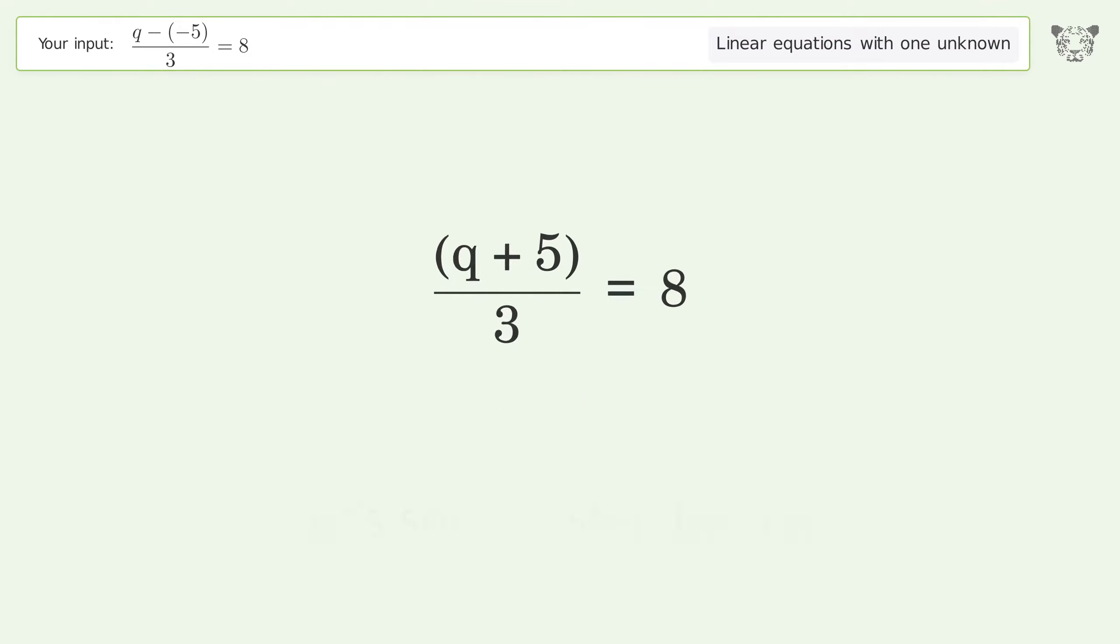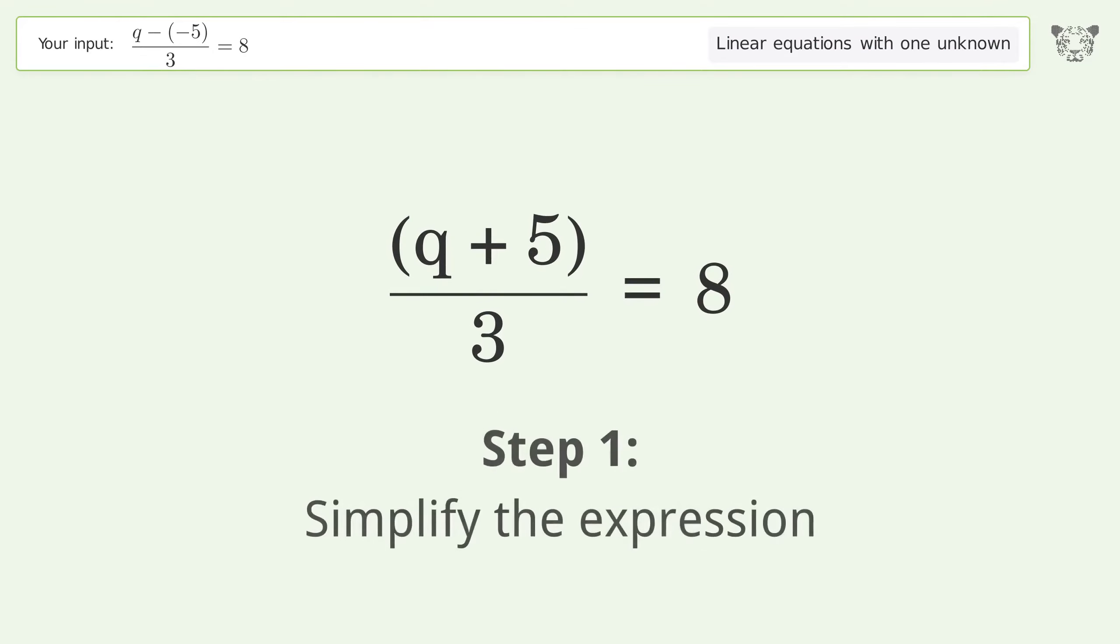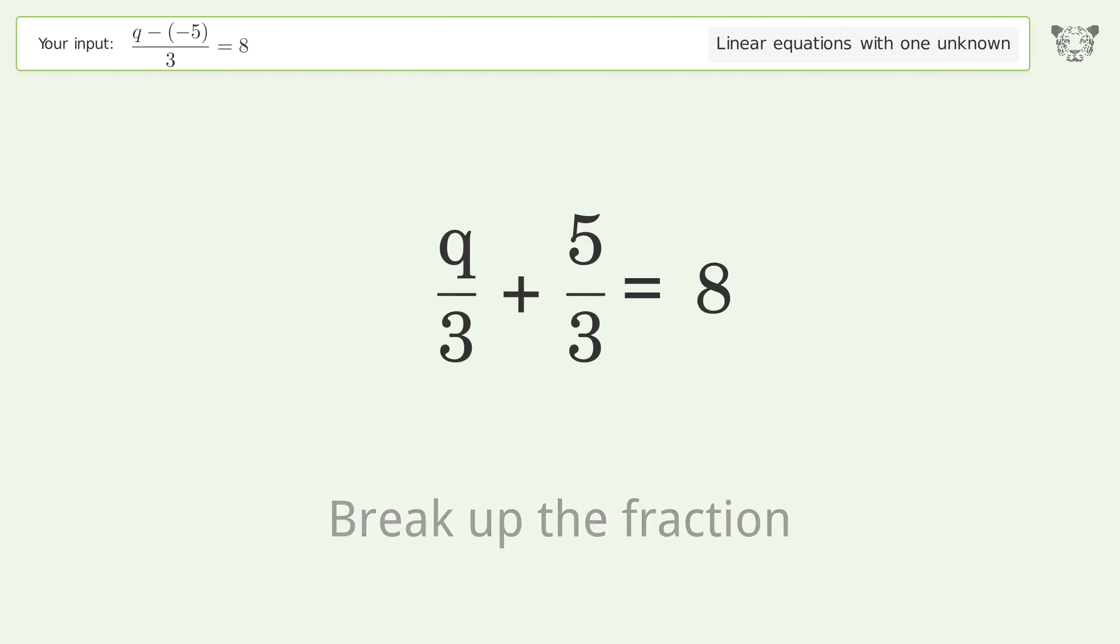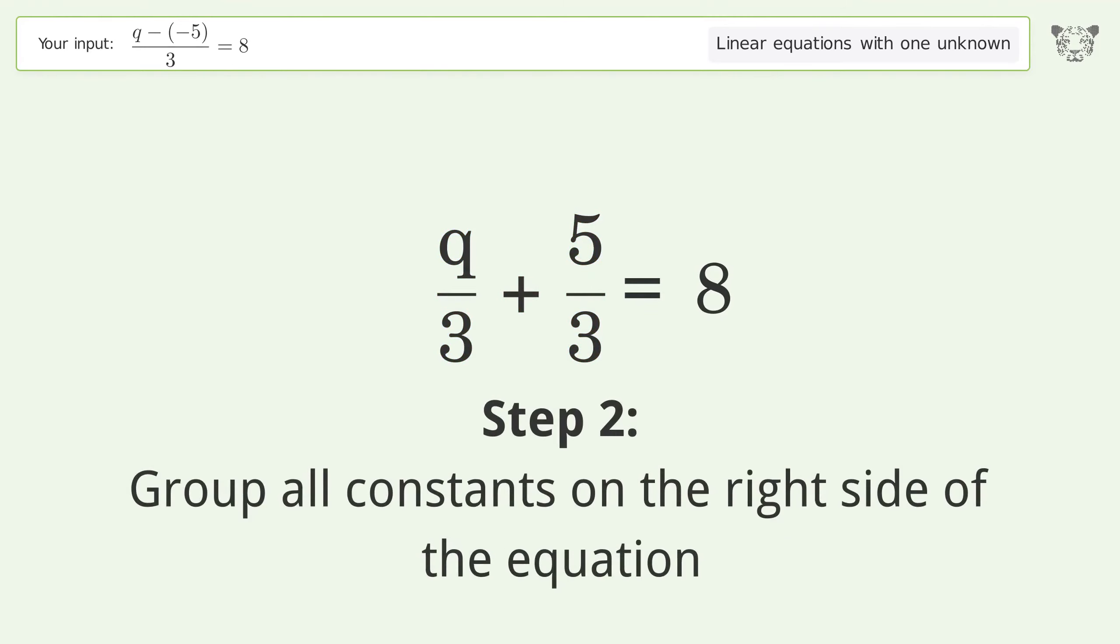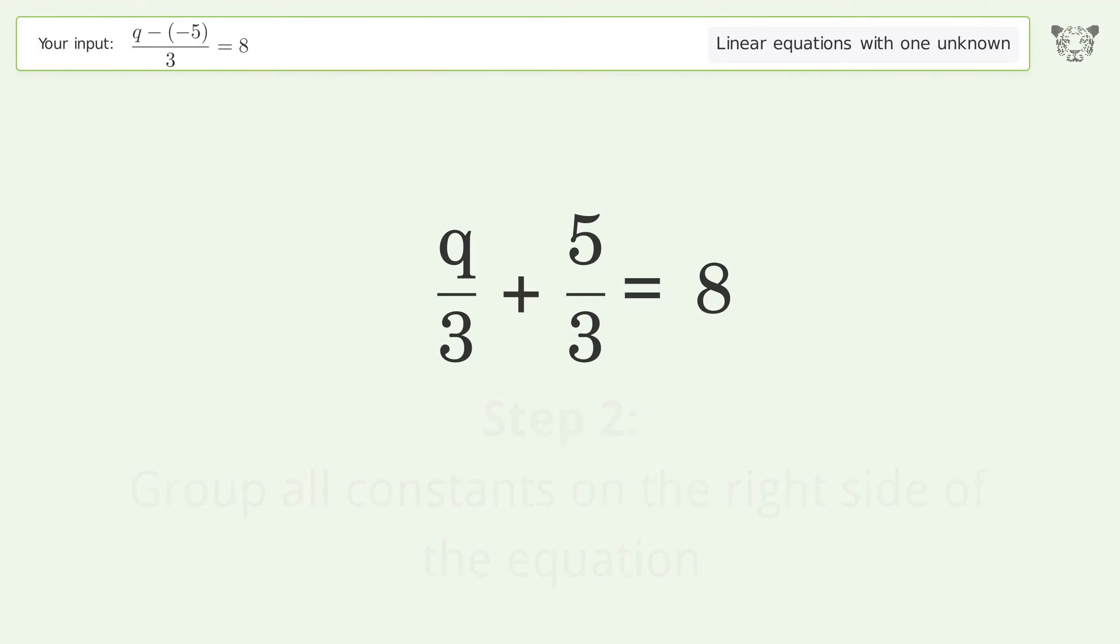Let's solve it step by step. Simplify the expression, break up the fraction, group all constants on the right side of the equation. Subtract 5 over 3 from both sides.